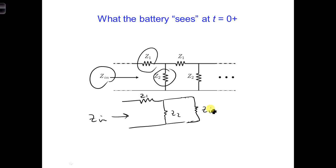In this case, the input impedance is equal to z in, is z1, plus z2 in parallel with z in.